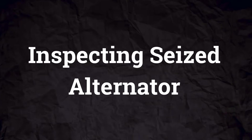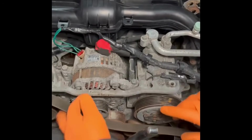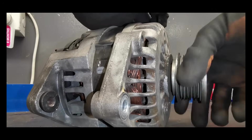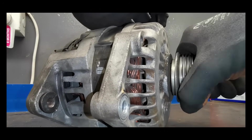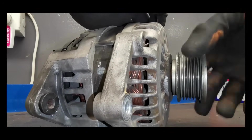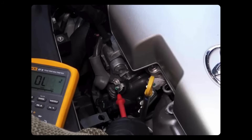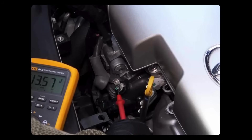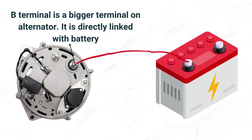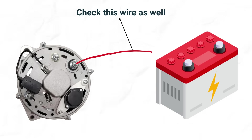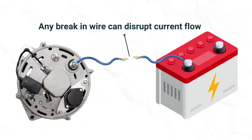To inspect a potentially seized alternator, remove the serpentine belt from the alternator pulley and attempt to manually rotate the pulley in both directions — if it remains immobile, the alternator is likely seized. If it rotates, measure the voltage at its B terminal, which should range from 12 to 14.5 volts as it is directly connected to the battery. Also inspect the wire connecting the B terminal of the alternator to the positive battery terminal, ensuring it is in good condition, as any breaks can disrupt the current supply to the battery.